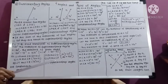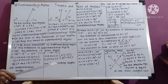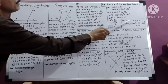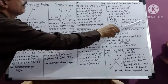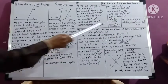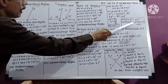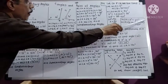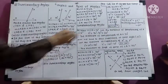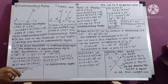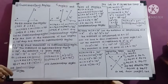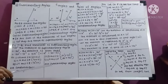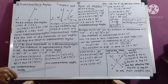By finding the value of x, we can find the measures of the angles. Measure of angle A equals 25 degrees. Measure of angle B equals 25 plus 40 degrees, which equals 65 degrees. Therefore 25 degrees and 65 degrees are the measures of the complementary angles.